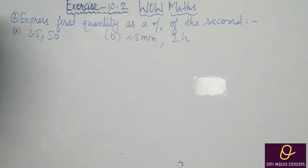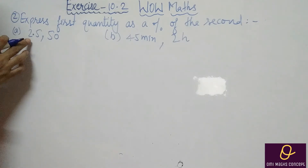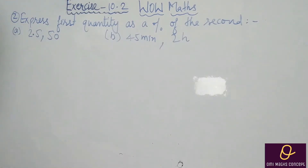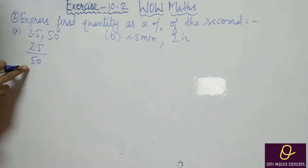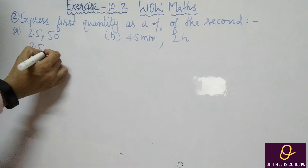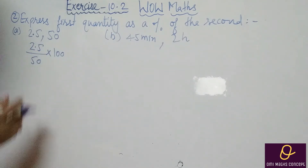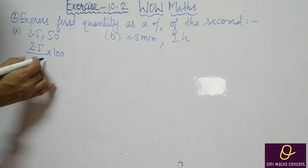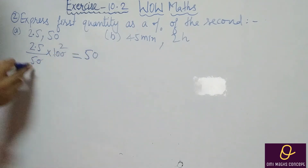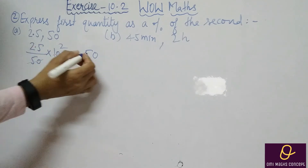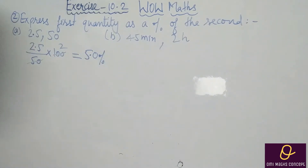Now question number 2: express the first quantity as a percentage of the second. What you need to do is compare the first quantity with the second and find out its percentage. When you compare, the units must be the same. In this part there are no units, so we do it directly: 2.5 divided by 50, into 100. That is 5%.